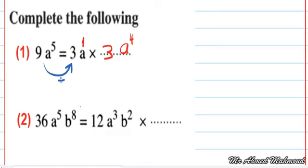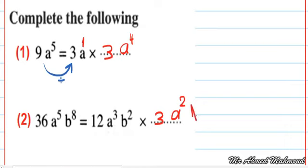Next: the missing term times 12a power 3, b power 2 equals 36a power 5, b power 8. Mental way: 12 times what equals 36? Answer: 3. a power 3 times a power what equals a power 5? Answer: a power 2, because 3 plus 2 equals 5. b power 2 times b power what equals b power 8? Answer: b power 6, because 2 plus 6 equals 8. Alternatively, divide 36a power 5, b power 8 by 12a power 3, b power 2.